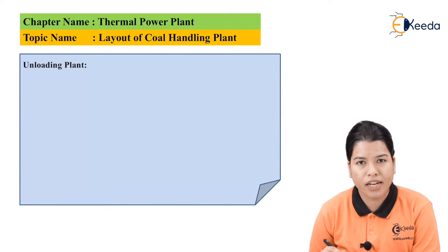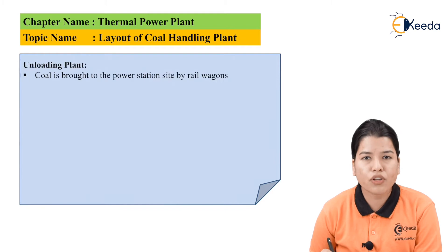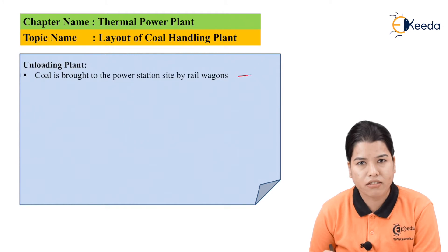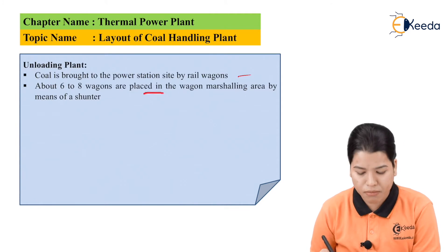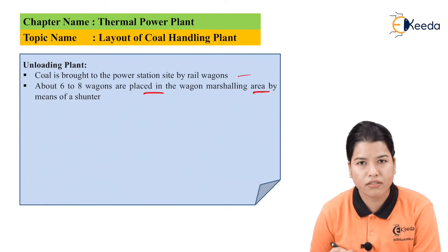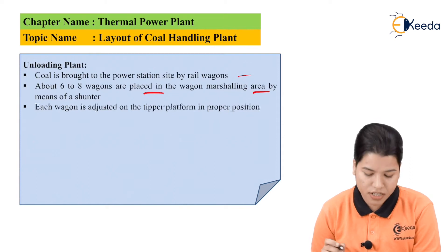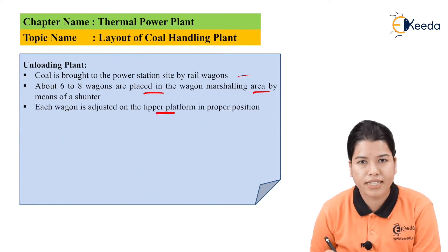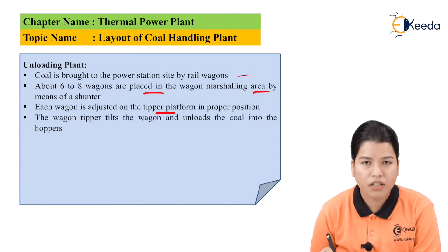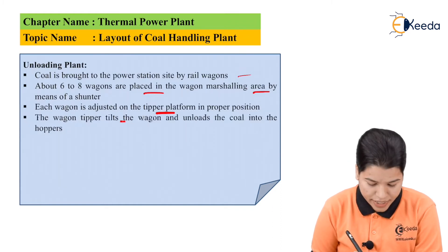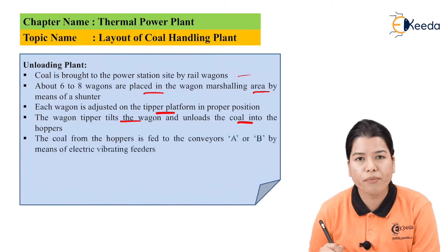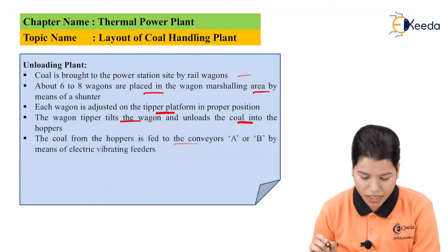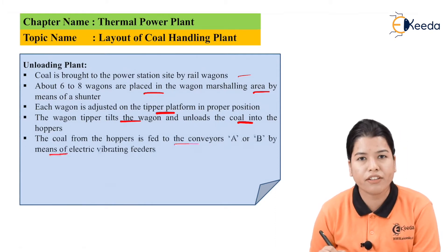First, we will study about the unloading plant. The coal is brought to the power station from the particular site by trail or by train. About 6 to 8 wagons are placed in the wagon marshalling area by means of a shunter. Each wagon is adjusted on the tipper platform in the proper section. The wagon tipper tilts the wagon and unloads the coal into the hopper. The coal from the hopper is fed to conveyors A and B by means of electric vibrating feeders.